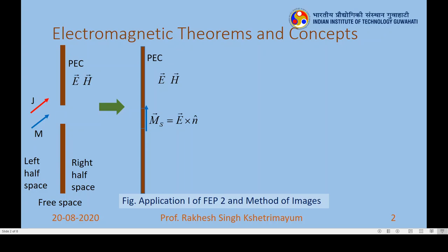Let us further simplify this using the method of images. Calculating fields in the presence of a PEC surface is a very difficult task, but the method of images provides a cure. In the method of images, we remove this PEC surface — the dashed line represents the location of the PEC. If we remove the PEC surface, we need to introduce some image current density so that the boundary condition of the PEC surface at this location is preserved.